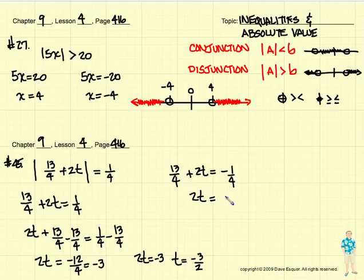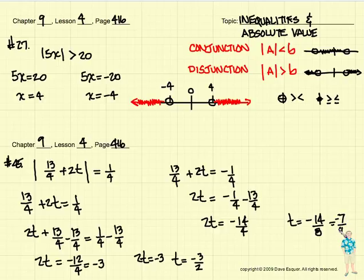We're going to do exactly the same thing. 2t is equal to, not in quite as gory detail, we'll subtract 13 fourths from both sides. So 2t will be equal to negative 14 fourths. And if we divide that by 2, t turns out to be negative 14 over 8. And if we can reduce that, we end up with, I believe, it's negative 7 over 4.